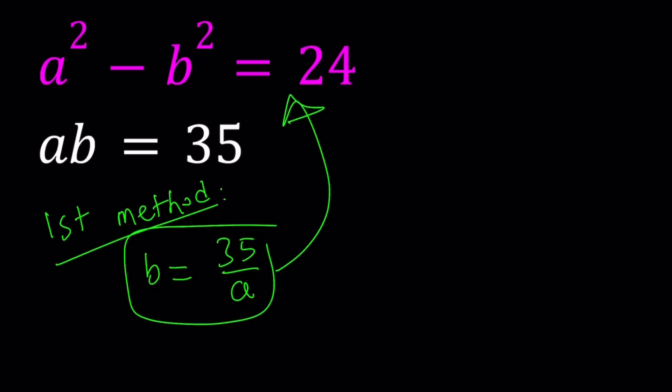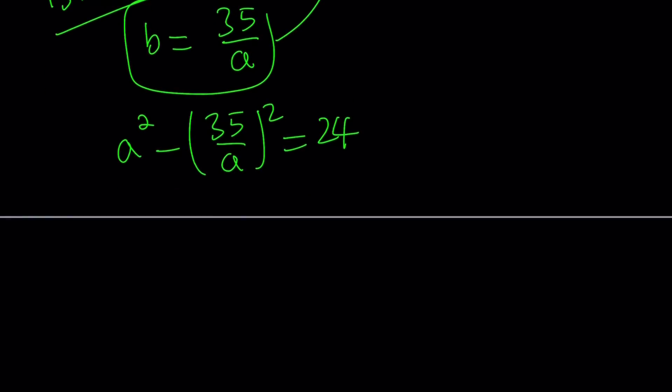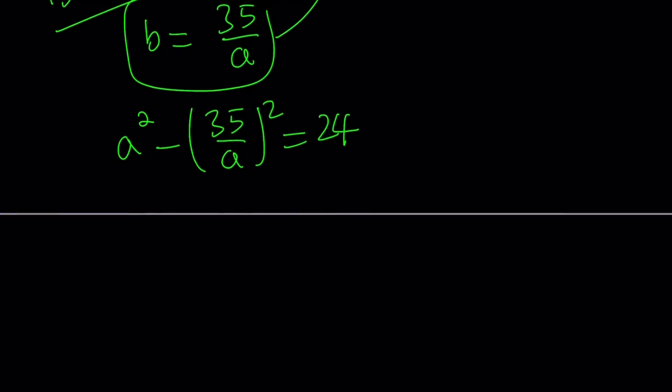If you do that, we get a squared minus 35 over a squared equals 24. To square a number that ends in 5, we take the 3 and multiply it by 1 more than the number, which is 4. So 3 times 4 is 12, and we'll just attach 25. So that's how we can easily square 35, which gives us 1225. And this equals 24.